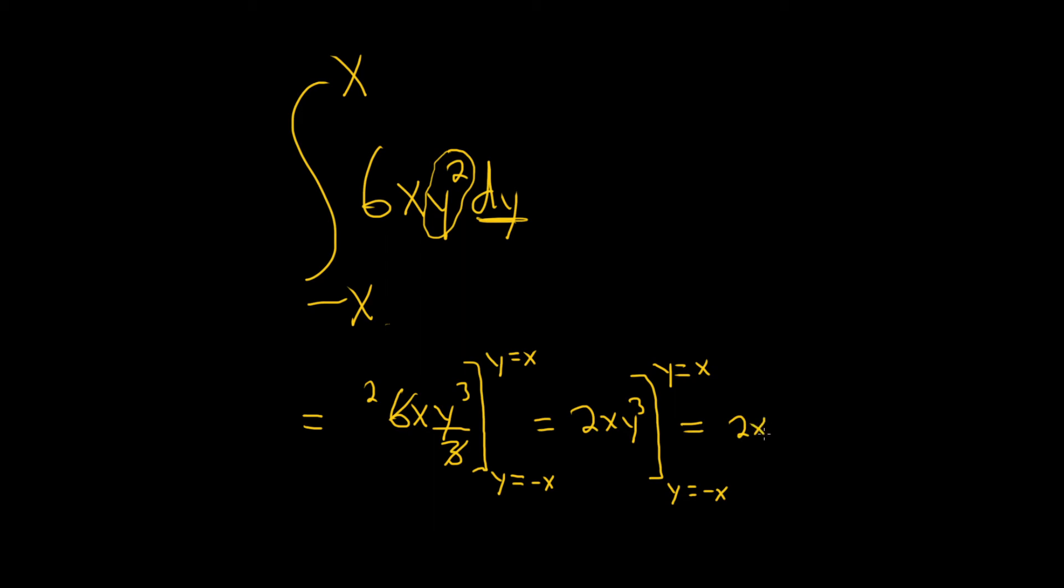So this is 2x, so you plug this one in first. So this would be times x cubed, minus, and then 2x, and then you replace the other one. So this one goes in here. So you get minus x cubed.